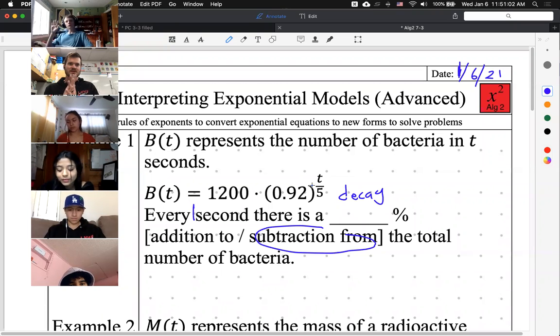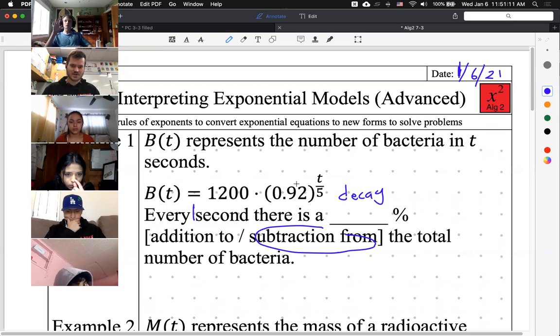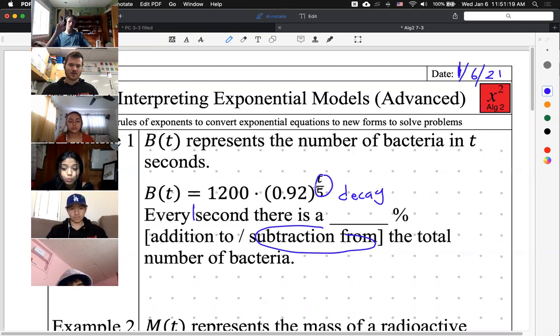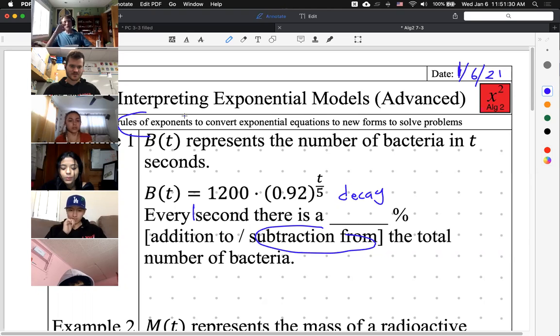You haven't done this before this unit. You've done it before previous units though. I'm going to change this 0.92 so that this is to the power of just normal t, not t divided by five, just normal t. How are we going to do that?